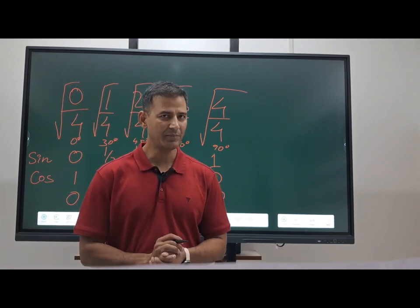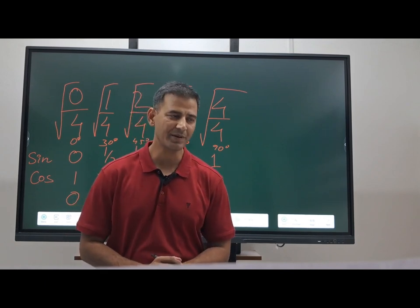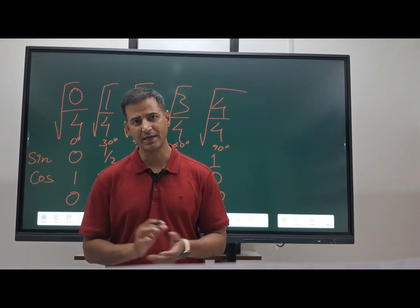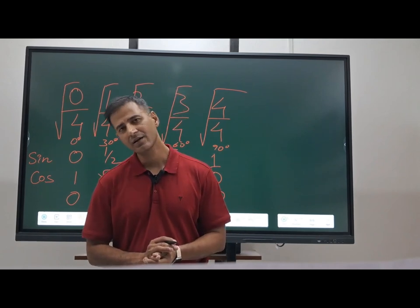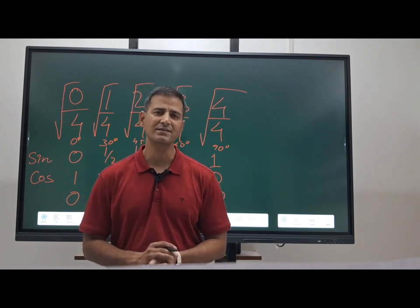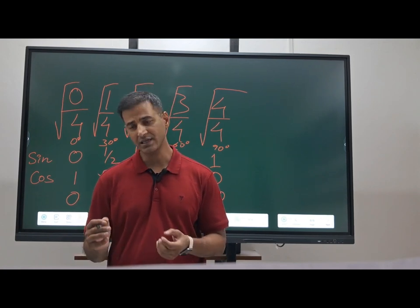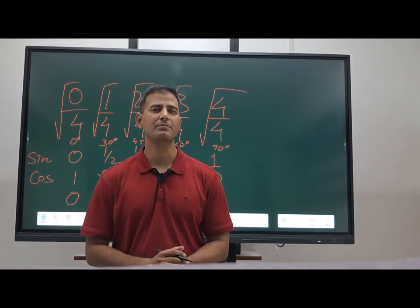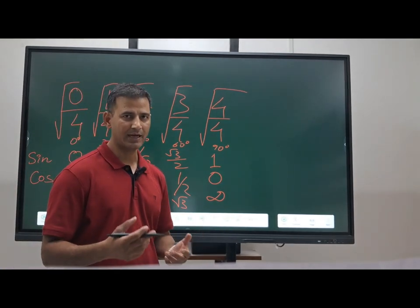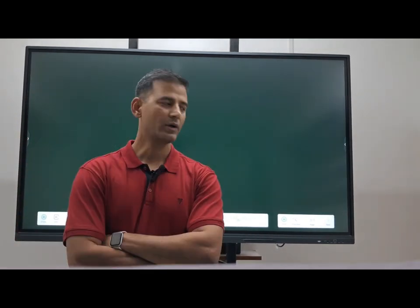You should remember these values because it makes your work very easy. In the NDA question paper, there are 120 questions and the time is 2 and a half hours — that is 150 minutes — so approximately 1 minute to 1 minute 10 seconds per question. It is better to learn these by heart, but for those who can't, this derivation method is available.